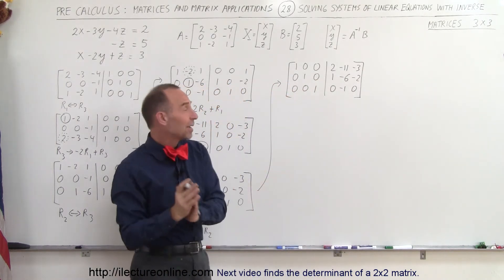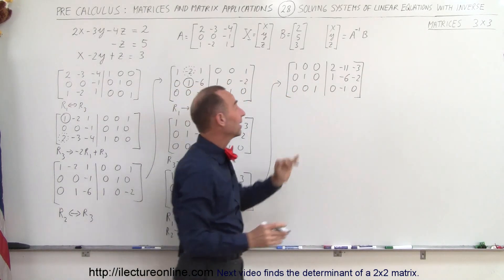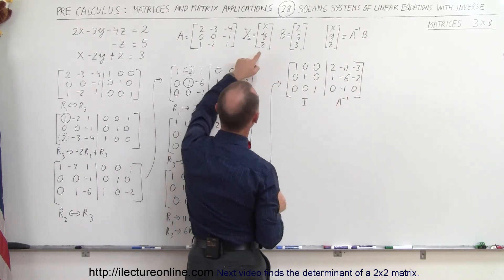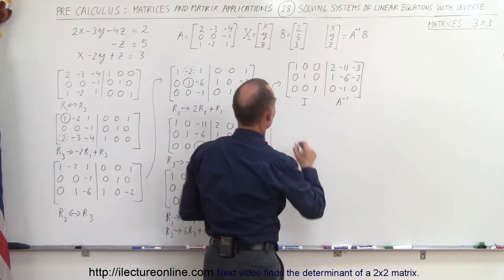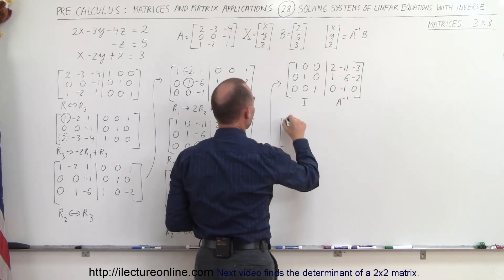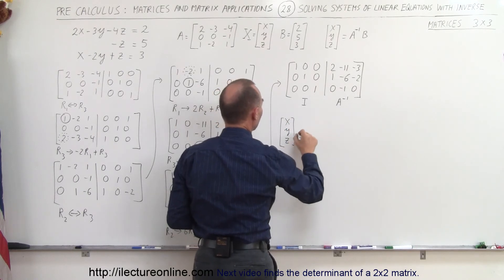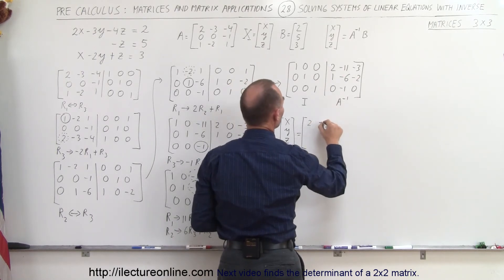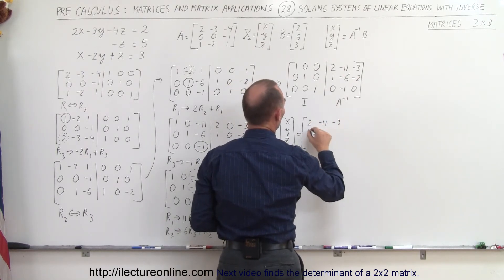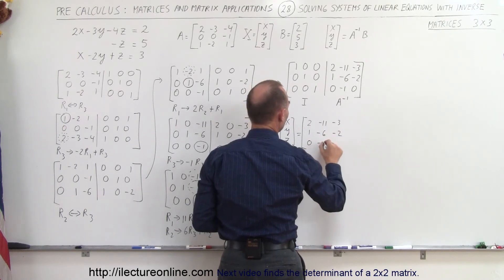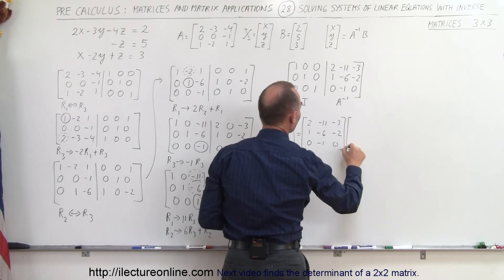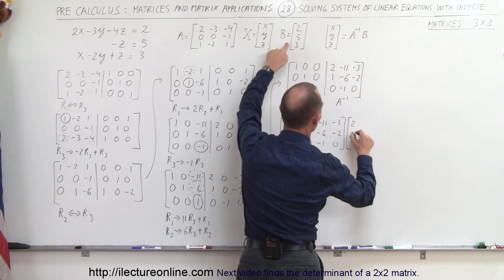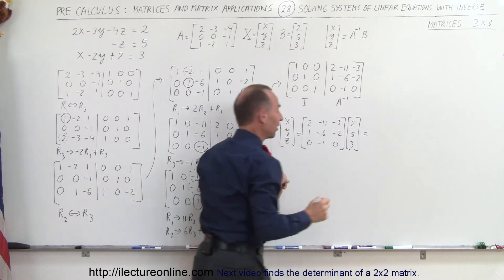Now on the left side I have the identity matrix, and on the right side I have the inverse of A. To find x, y, and z, the matrix containing x, y, and z equals the inverse of A — which is 2, -11, -3 / 1, -6, -2 / 0, -1, 0 — multiplied by the B matrix, which is 2, 5, 3.